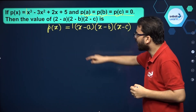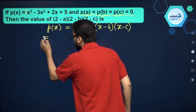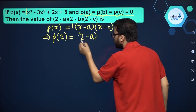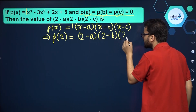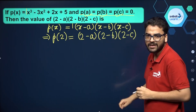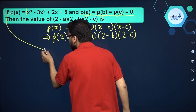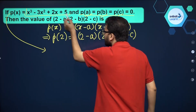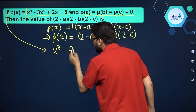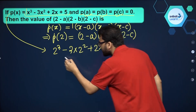Now, we have to find the value of (2 minus A)(2 minus B)(2 minus C). So can I put X equal to 2? So P of 2, and in place of X you put 2, so (2 minus A)(2 minus B)(2 minus C) will come. That means the value of (2 minus A)(2 minus B)(2 minus C) is nothing but equal to P of 2 only. Now the actual form of the polynomial is also given to us, so we just have to find P of 2 — put 2 in place of X in this polynomial. So it is 2 cubed minus 3 into 2 squared plus 2 into 2 plus 5. Now you can simplify this and you will get the answer.